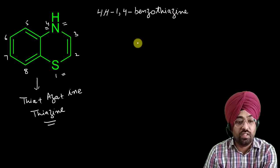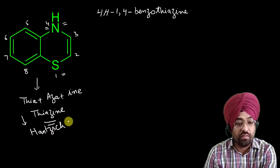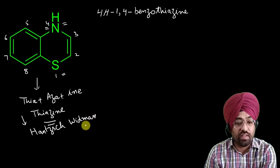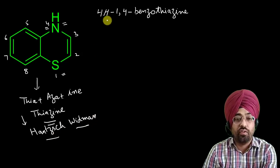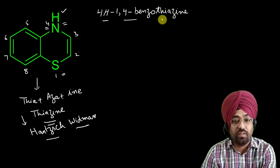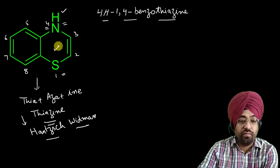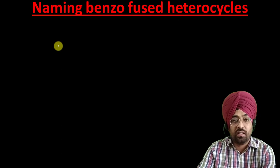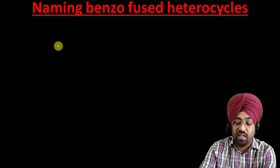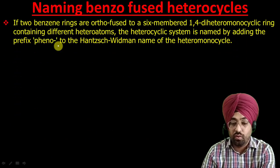This is named according to the Hantzsch-Widman rules, which we have already discussed — you can revise that from the earlier lecture. So '4H' indicates the saturated center, and '1,4-benzothiazine' is the name of this benzo-fused heterocycle. Now there are some special cases which are named by specific rules.